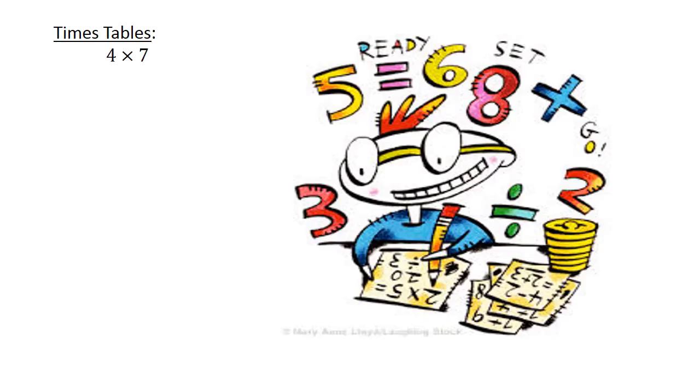Times tables. 4 times 7 equals 28. 7 times 6 equals 42.